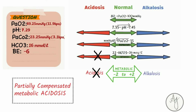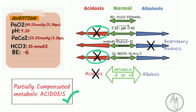This is a partially compensated metabolic acidosis. There's a decrease in bicarb and a decrease in base excess — that's base deficit — indicating metabolic acidosis. At the same time, carbon dioxide is low, demonstrating a respiratory alkalosis as compensation. The pH and the bicarbonate both match in showing acidosis, so the primary problem is metabolic acidosis. The patient is exhaling carbon dioxide via hyperventilation to compensate, but since pH has not returned to normal limits, the compensation is only partial.